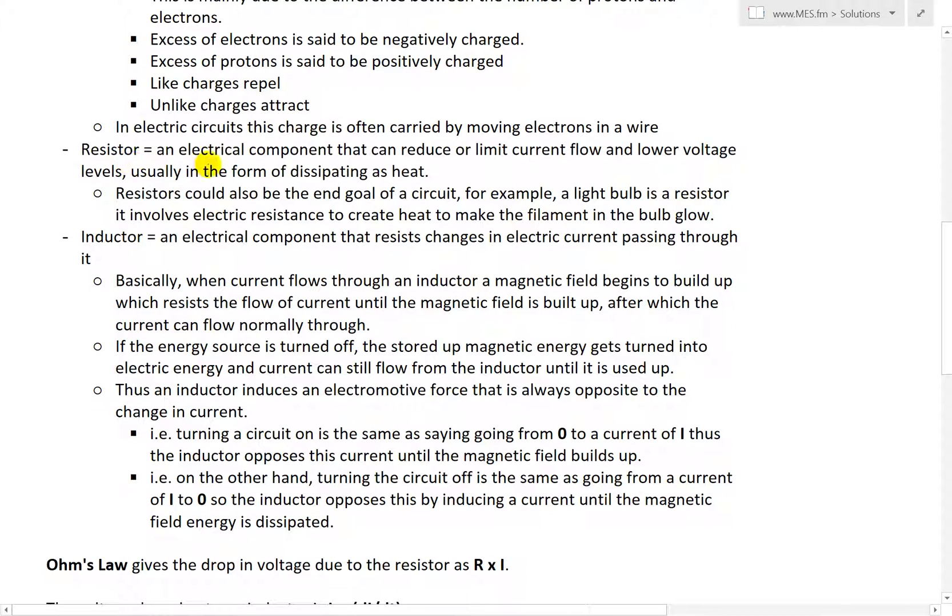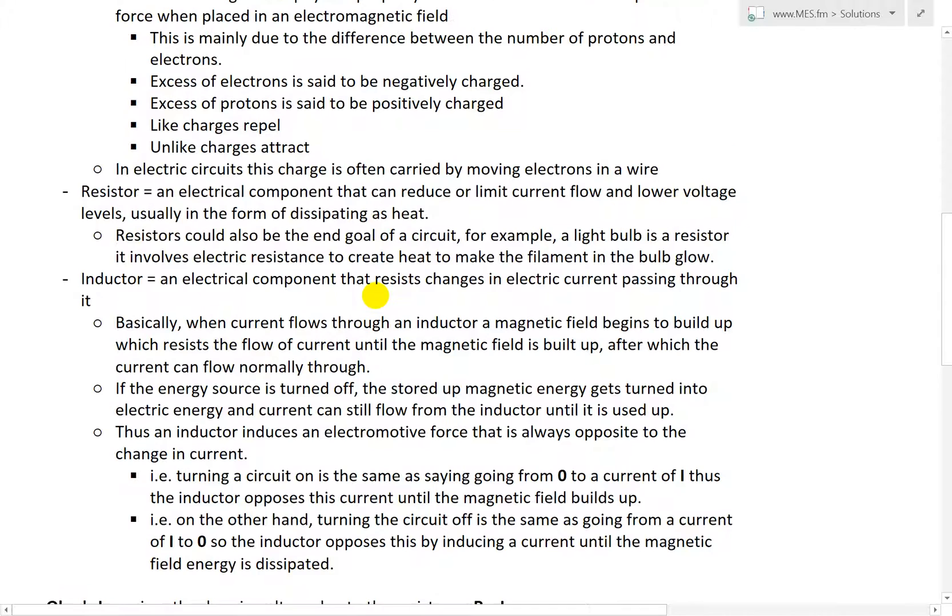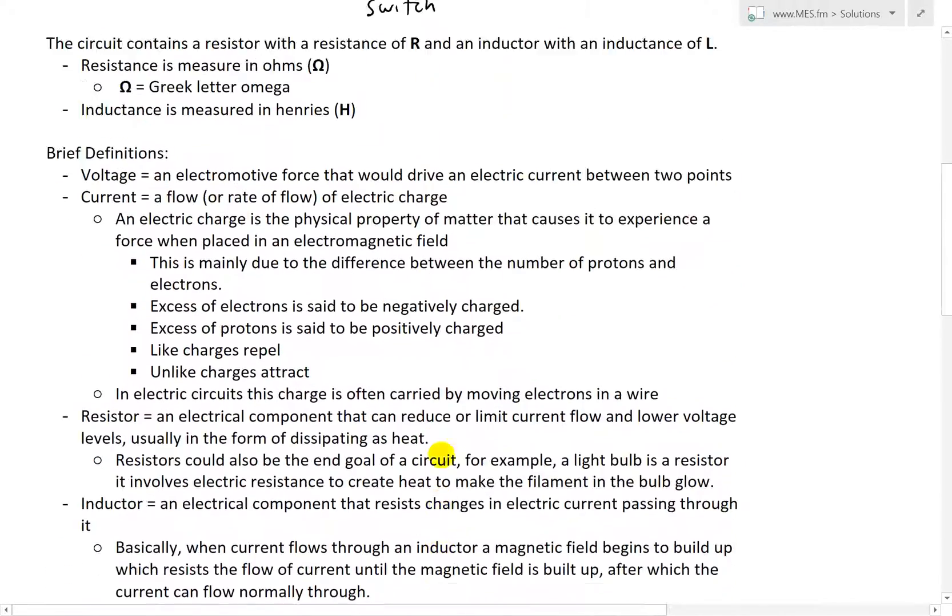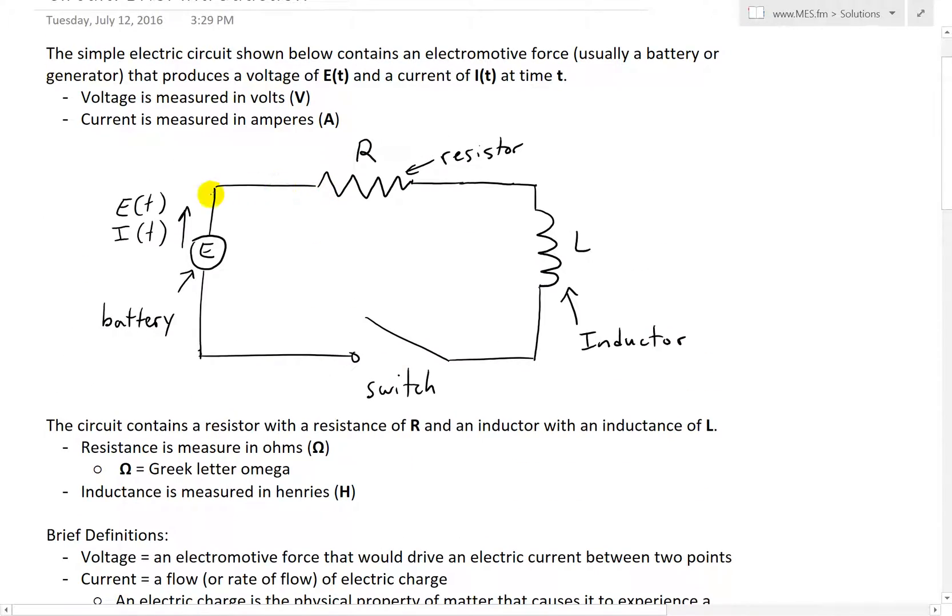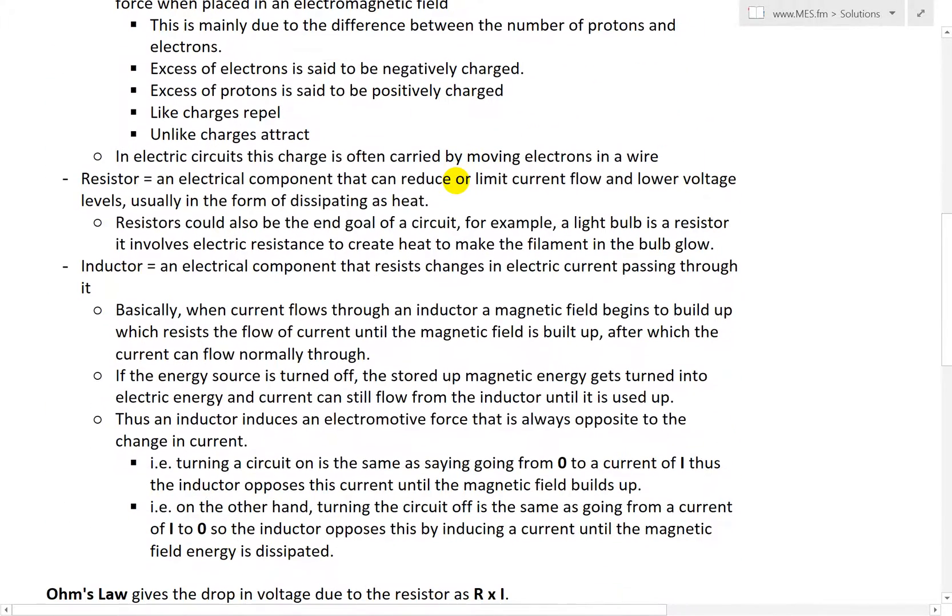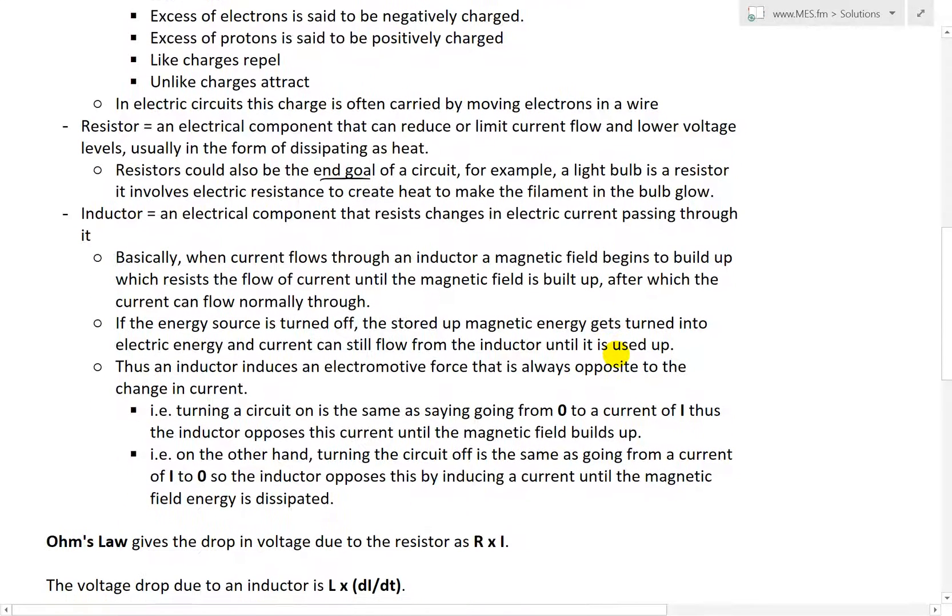A resistor is an electrical component that can reduce or limit current flow and lower voltage levels, usually in the form of dissipating as heat. So basically this would stop or resist the current by dissipating as heat. Resistors could also be the end goal of a circuit, for example, a light bulb. A light bulb itself is a resistor - it involves electrical resistance to create heat to make the filament in the bulb glow.